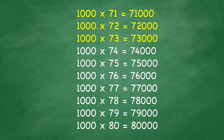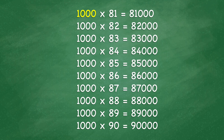1,000 x 73 equals 73,000. 1,000 x 74 equals 74,000. 1,000 x 75 equals 75,000. 1,000 x 76 equals 76,000. 1,000 x 77 equals 77,000. 1,000 x 78 equals 78,000. 1,000 x 79 equals 79,000. 1,000 x 80 equals 80,000.